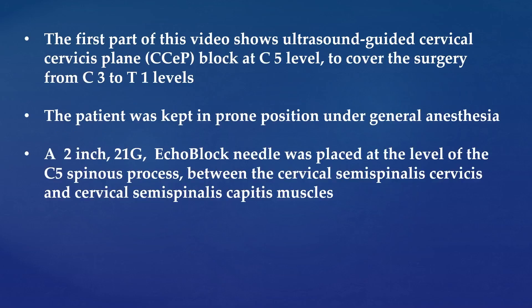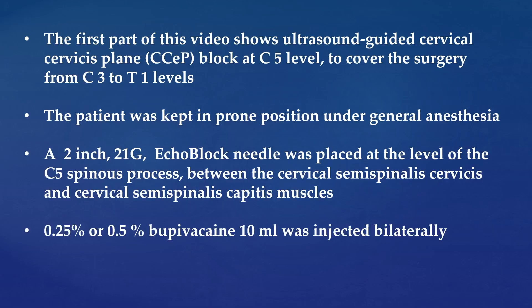A 2-inch echogenic block needle was placed at the level of the C5 spinous process, between the cervical semispinalis and cervical capitis muscles. 0.5% bupivacaine, 10cc, was injected bilaterally.